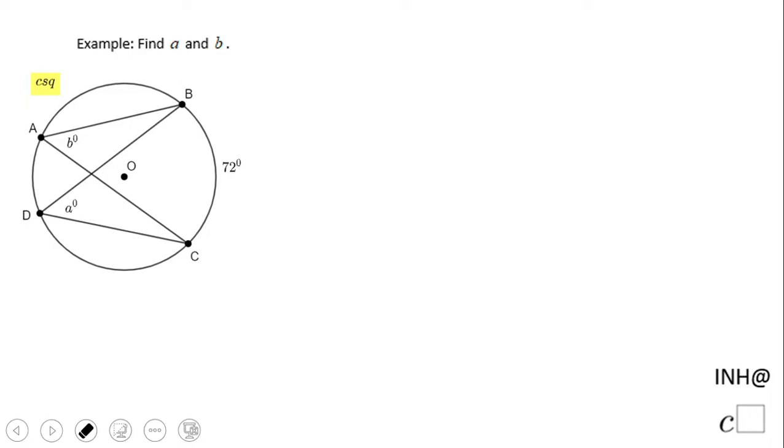Welcome or come back to I Need Help at C Squared. In this example, we need to find a and b. a is the measure of angle BDC and b is the measure of angle BAC.